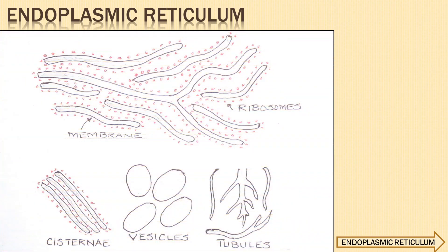The cytoplasmic matrix shows a complex membrane-lined network of flattened sacs known as cisternae, tubules and vesicles. These often remain concentrated in the cytoplasmic portion of the cytoplasm, therefore they are known as endoplasmic reticulum. They play a major role in the production, processing and transport of proteins and lipids.